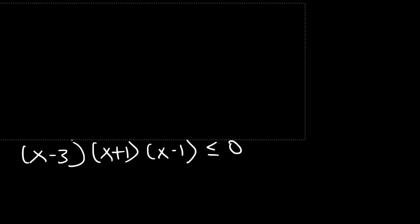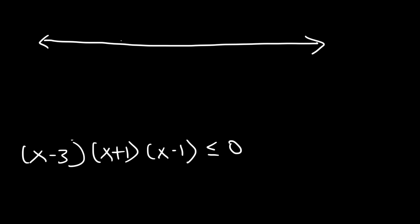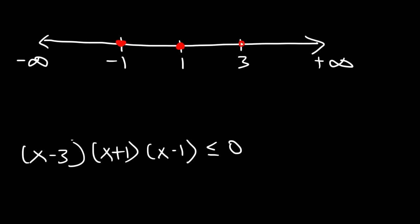Now let's create the number line. There are three points of interest: negative 1, 1, and 3, with positive infinity on the right and negative infinity on the left. Notice it's less than or equal to 0 — because of the 'equal to' part, the three points negative 1, 1, and 3 are included, so I'm going to use a closed circle at each of those points.